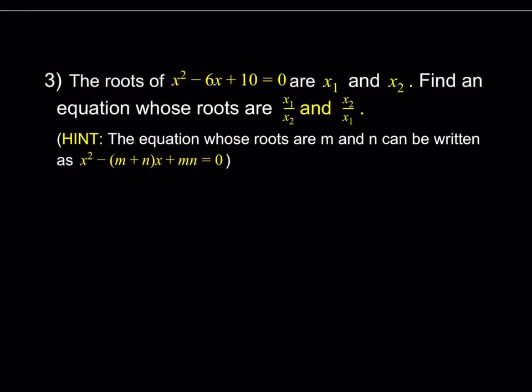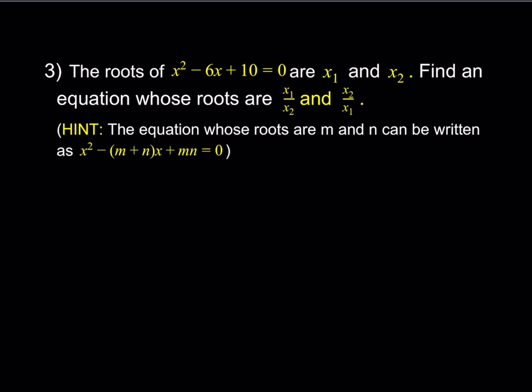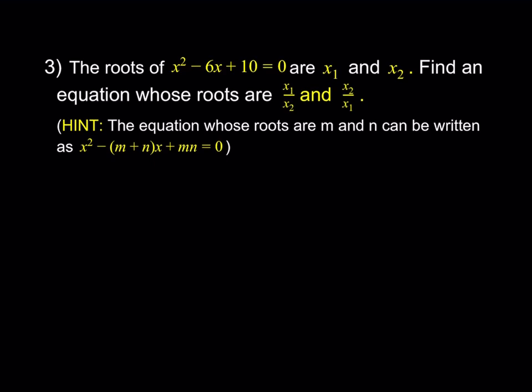Problem 3: an equation whose roots are given can also be written directly. If the roots are m and n, where m equals x1 over x2 and n equals x2 over x1, I need the sum of m and n and their product so that I can write the equation. Here x1 and x2 are roots of the original equation, so from that equation: x1 plus x2 equals 6 and x1 times x2 equals 10.